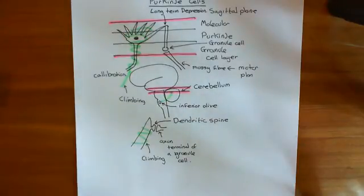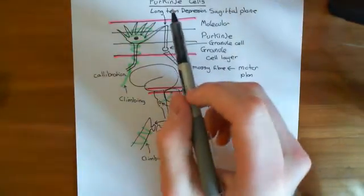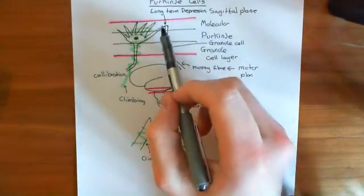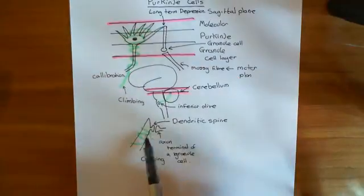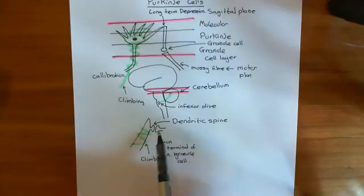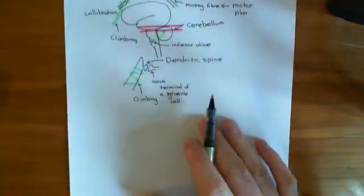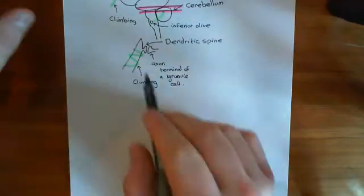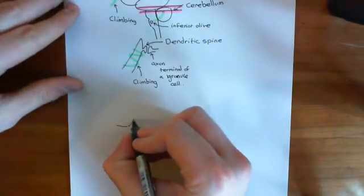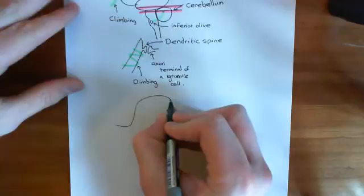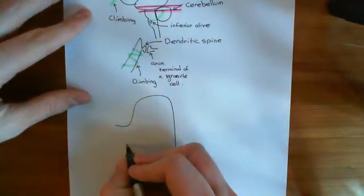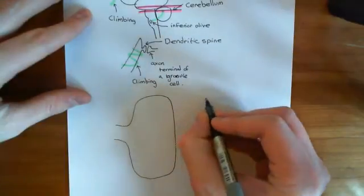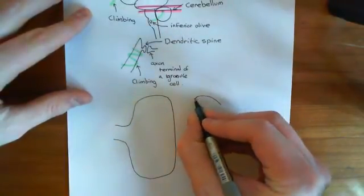Now we want to look at the more molecular details of this. We're going to look at the details of the synapse between granule cells and Purkinje cells — this classical synapse between an axon terminal and a dendritic spine. So here is our dendritic spine of our Purkinje cell, and it's connected to an axon terminal of a granule cell.